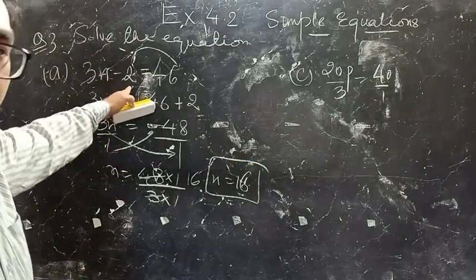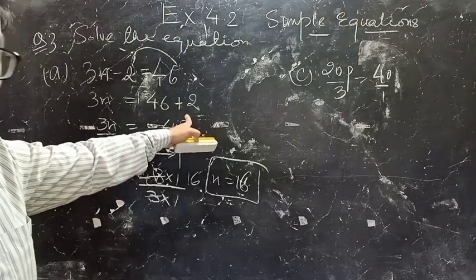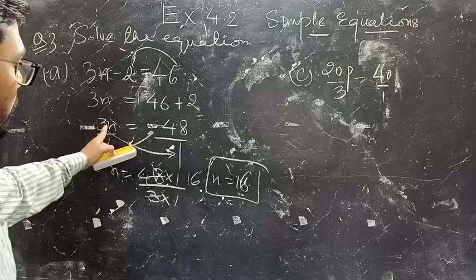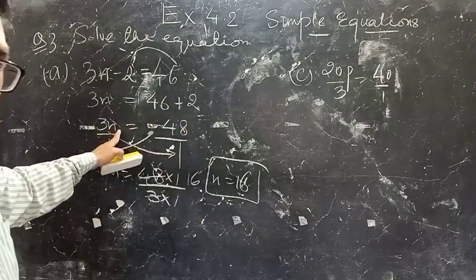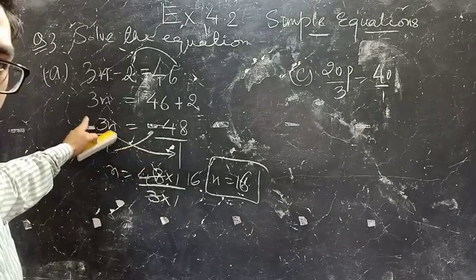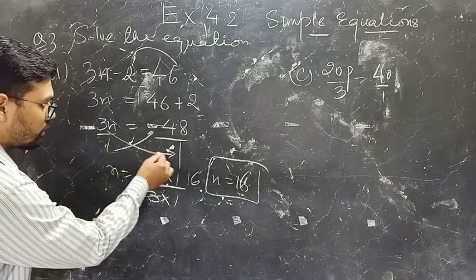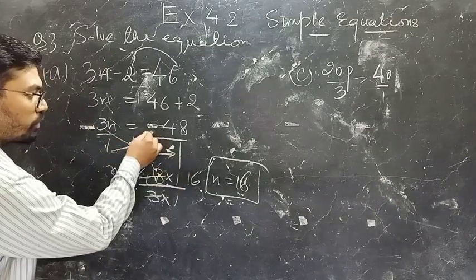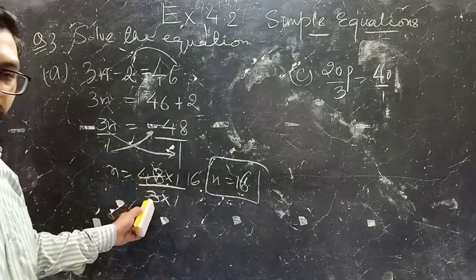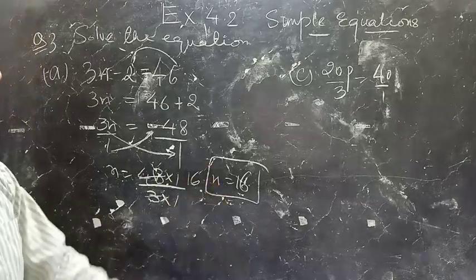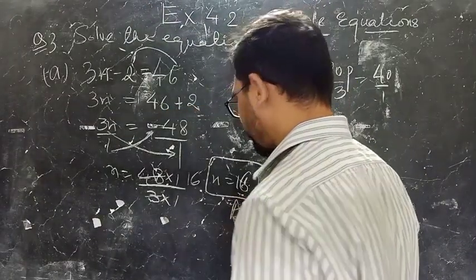You took this minus 2 from LHS to RHS, it became plus 2 — sign is opposite. So 3N equals 46 plus 2, which is 48. Now you need to calculate the value of N, so 3 needs to be cross multiplied with 1. Take 3 to the denominator and 1 to the numerator. 3 sixteens are 48, so N equals 16.